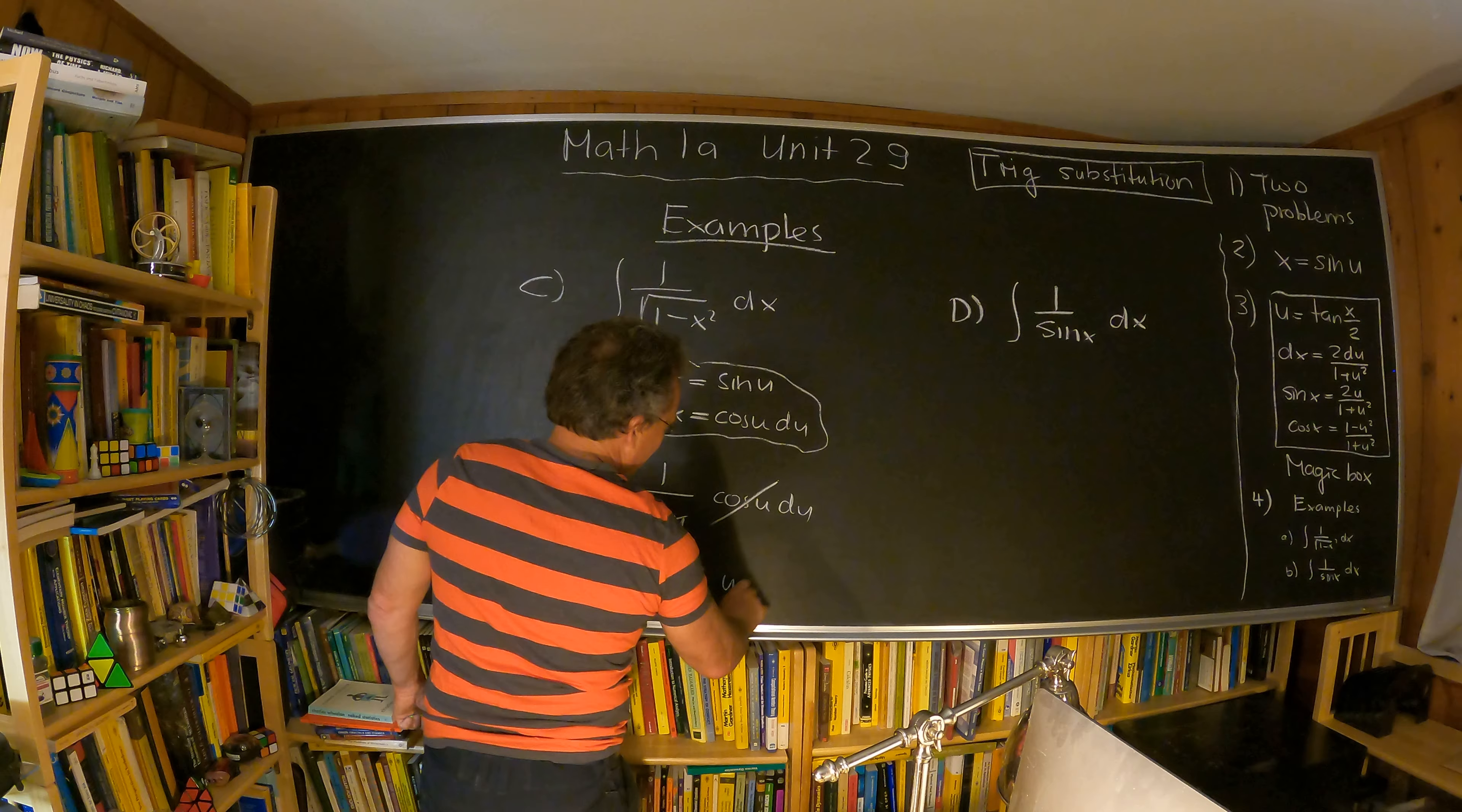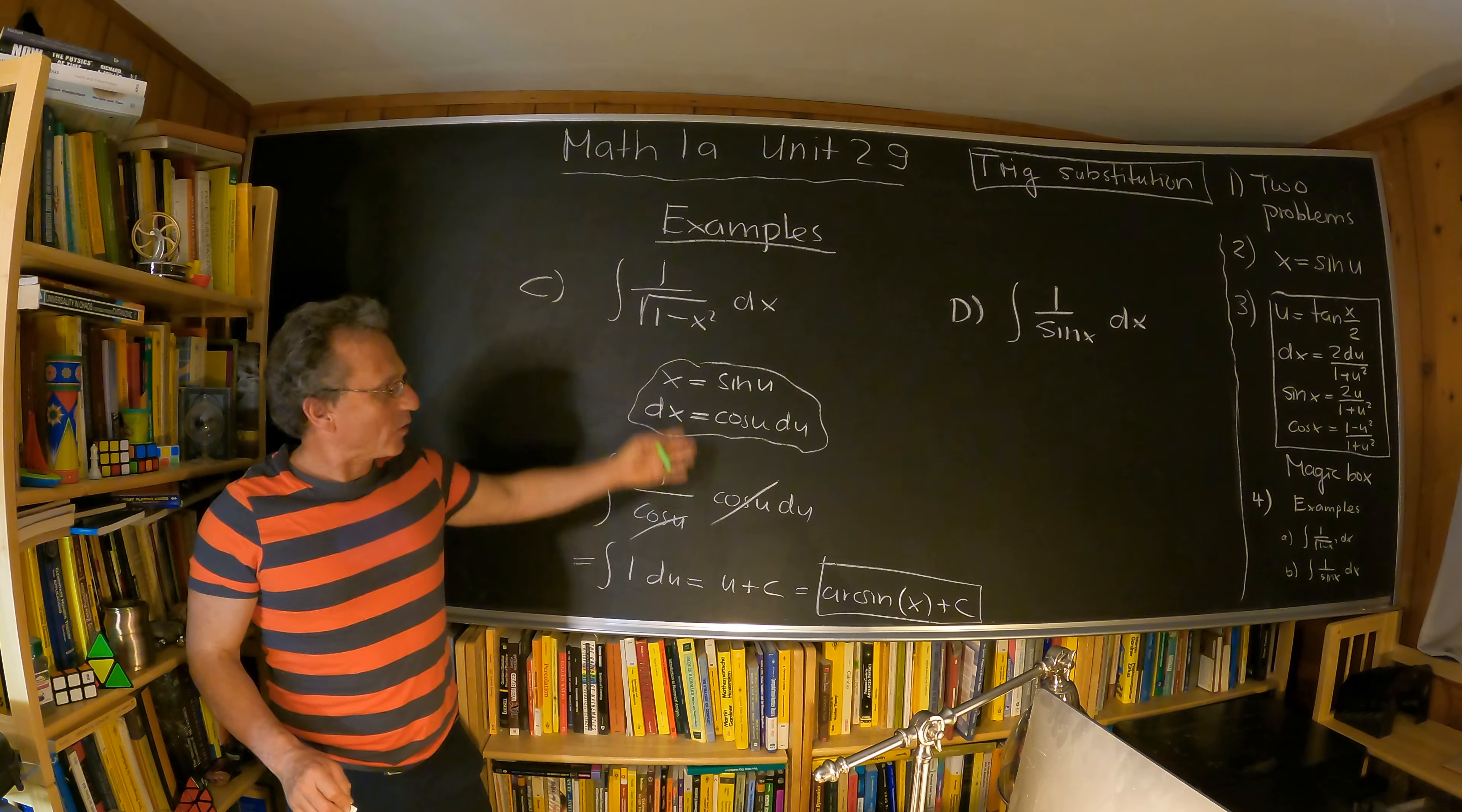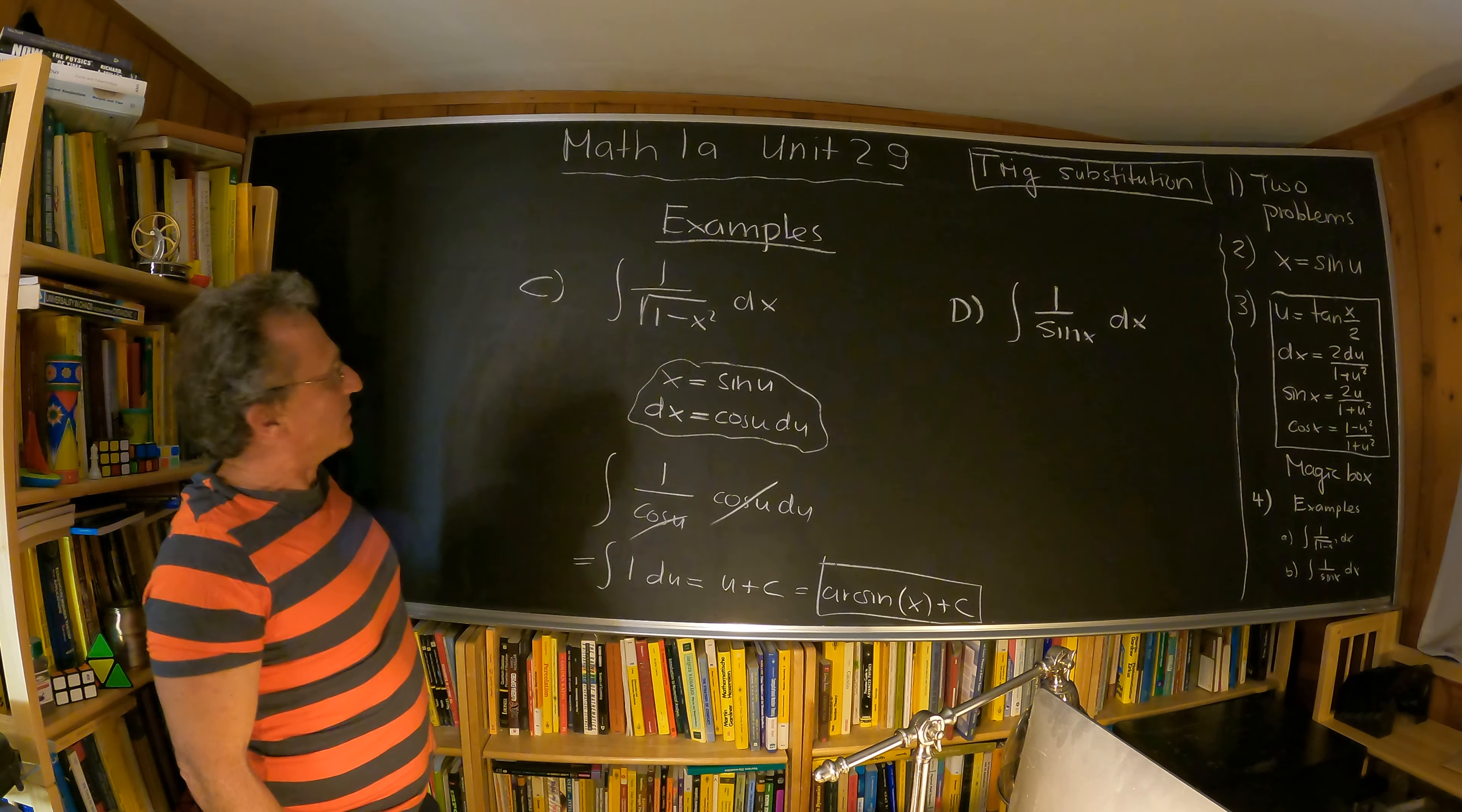And now we plug in back substitute, so this is arc sine of x plus c. That's an integral we already knew, we have computed this using the chain rule, and so we can also do that. But the trick substitution works for many more examples. In the homework you do for example the power 3 here, and then we would be lost, we would not know how to do that.